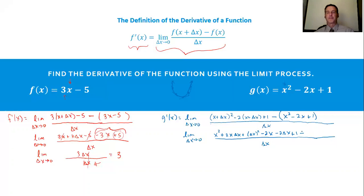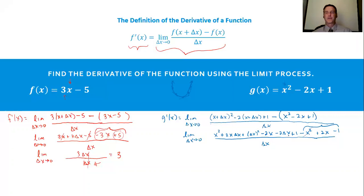When you have that subtraction with a set of parentheses, you change all the signs — that's subtract x squared plus 2x minus 1. I know I did my work right if everything in the back cancels out with something in the front. The subtract x squared cancels with the x squared, and the 2x cancels with the 2x. The subtract 1 will cancel with the add 1.